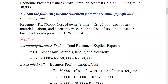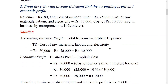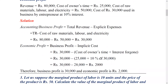The cost of raw materials is 30,000, the cost of the owner's time is 25,000, and the cost of capital at 10% interest on 30,000 becomes 3,000. So total explicit costs are around 50,000. Accounting profit equals revenue minus explicit cost: 80,000 minus 50,000 equals 30,000. Economic profit equals total revenue minus explicit cost minus implicit cost: 80,000 minus 50,000 minus 28,000, giving economic profit of 2,000.